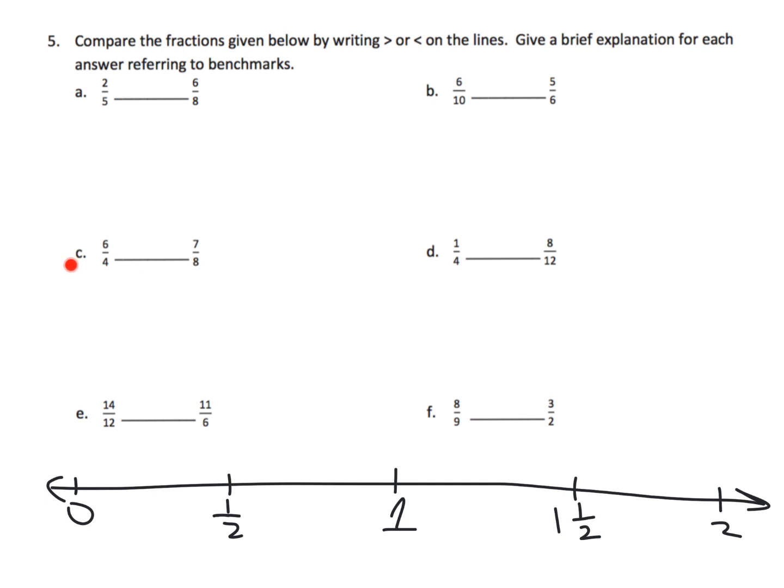Some obvious ones that are really a new technique we can use is greater than or less than 1. For example, right here, we know that 6 fourths is bigger than 1, and 7 eighths is less than 1, so that automatically tells us that 6 fourths is larger than 7 eighths. And we can use that same argument down here on f. 3 halves is larger than 1, 8 ninths is less than 1, so that means we know 3 halves is larger than 8 ninths. And that's not to say we're going to forget all the other techniques we learned on the previous slide, but that's a new technique that we get to use.